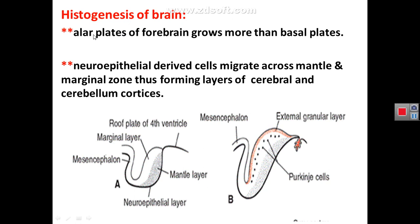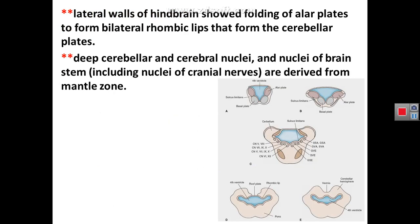In the forebrain, the alar plates grow further than the basal plates, particularly in the cerebral hemispheres derived from the telencephalon. Therefore, the cerebrum will have many structures related to sensory function because more structures are derived from the alar plate. In the hindbrain, folding of the alar plates forms the rhombic lip, which grows to form the cerebellar hemispheres.